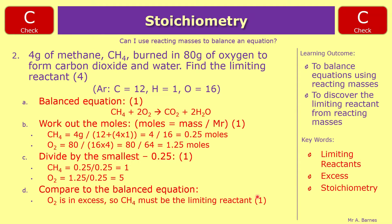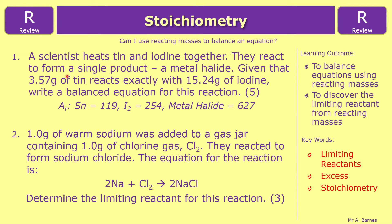That brings us to the end of this video. I have a couple of review questions for you. Question one: a scientist heats tin and iodine together; they react to form a single product, a metal halide. Given that 3.57 grams of tin reacts exactly with 1.524 grams of iodine, write a balanced equation. Question two: 1 gram of sodium was added to 1 gram of chlorine gas and reacted to form sodium chloride. The equation is 2Na + Cl₂ → 2NaCl. Determine the limiting reactant, worth three marks.